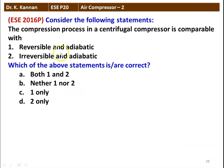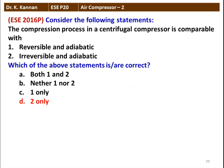The next question is from the 2016 question paper. The compression process in a centrifugal compressor is comparable with: (1) reversible and adiabatic, or (2) irreversible and adiabatic. The correct answer is statement 2: in a centrifugal compressor, the compression process is irreversible and adiabatic.